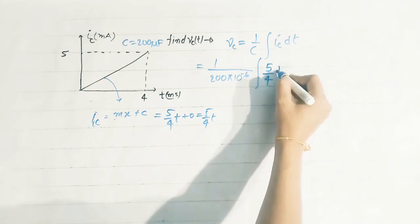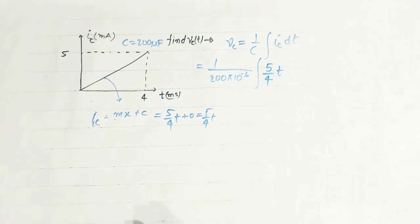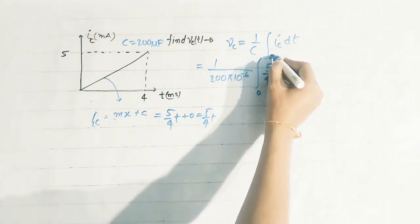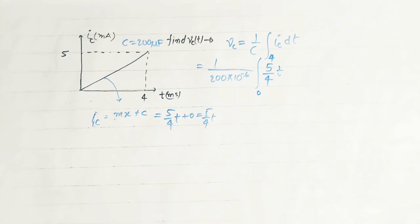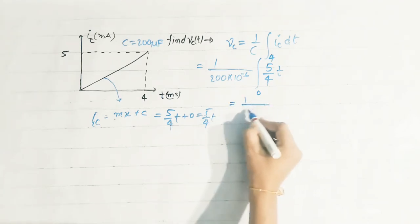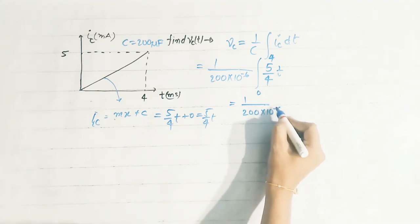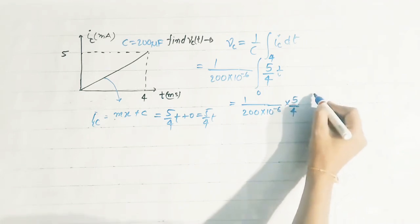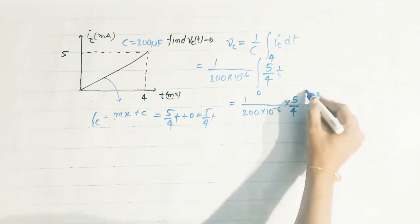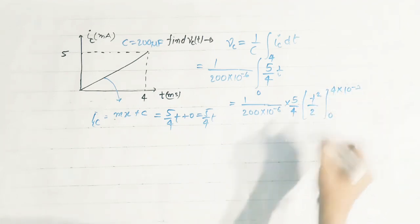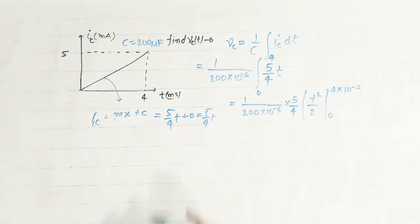We have to integrate (5/4)t with limits from 0 to 4 milliseconds. On integrating, we get 1 upon (200 into 10 to the power minus 6) times (5/4) times t squared by 2, with limits 0 to 4 into 10 to the power minus 3.